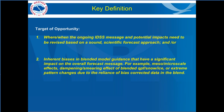Before presenting the step-by-step process, I want to provide a clear definition of 'target of opportunity.' It's a two-part definition. Part one: when and where the ongoing IDSS message and potential impacts need to be revised based on a sound scientific forecast approach and/or inherent biases in blended model guidance — such as meso or micro scale effects, the dampening or smearing effect of blended QPF and snow/ice output, or extreme pattern changes due to reliance on bias-corrected data in the blend.